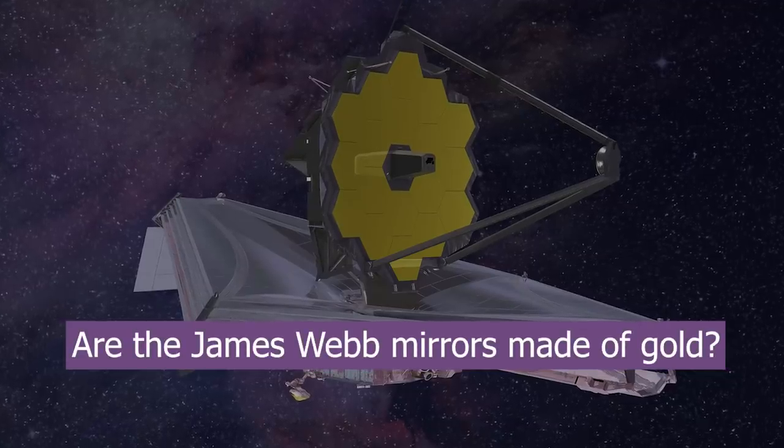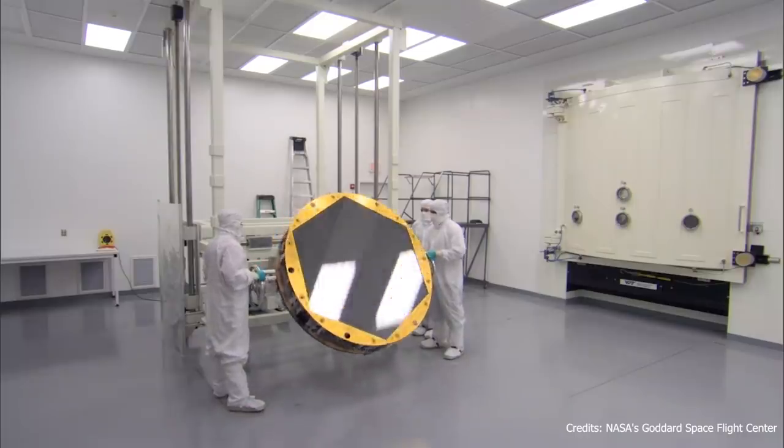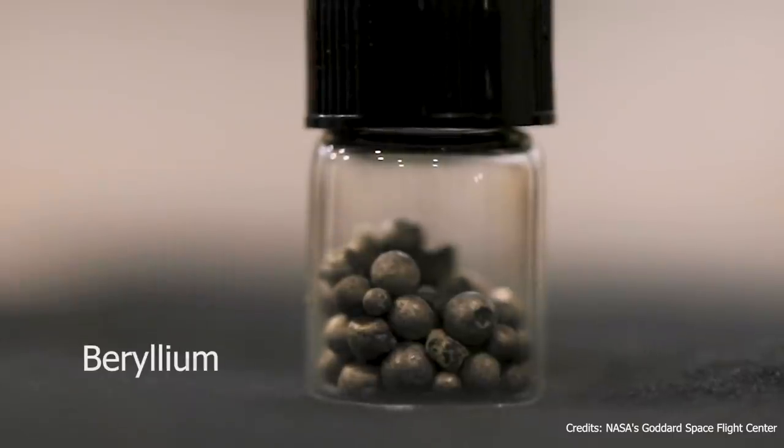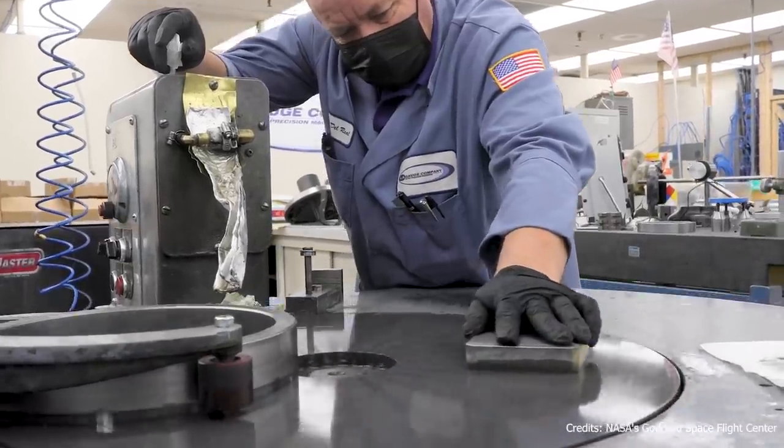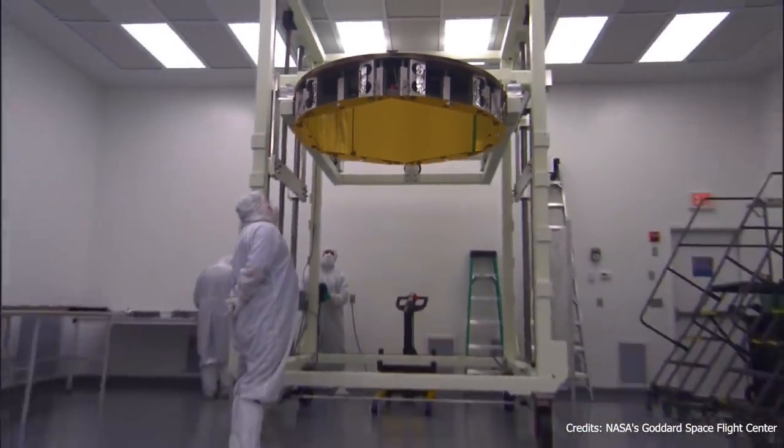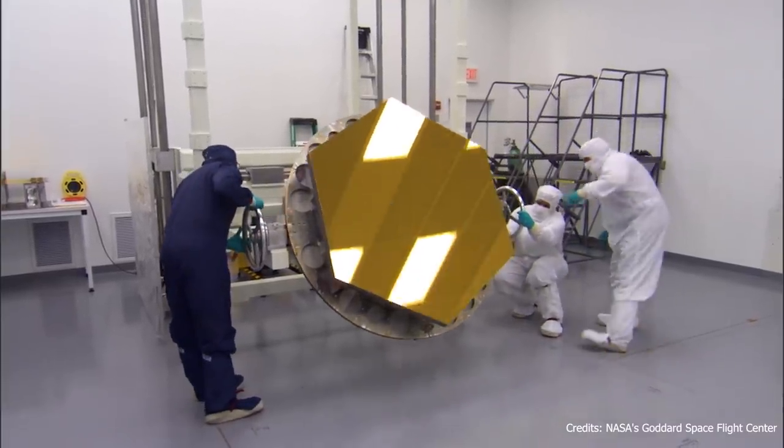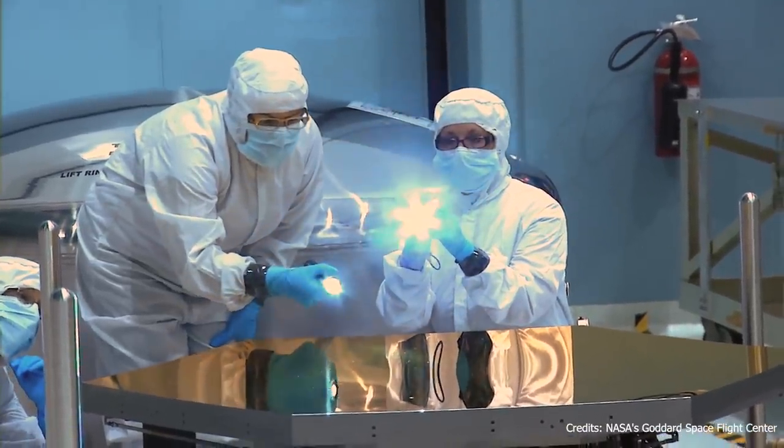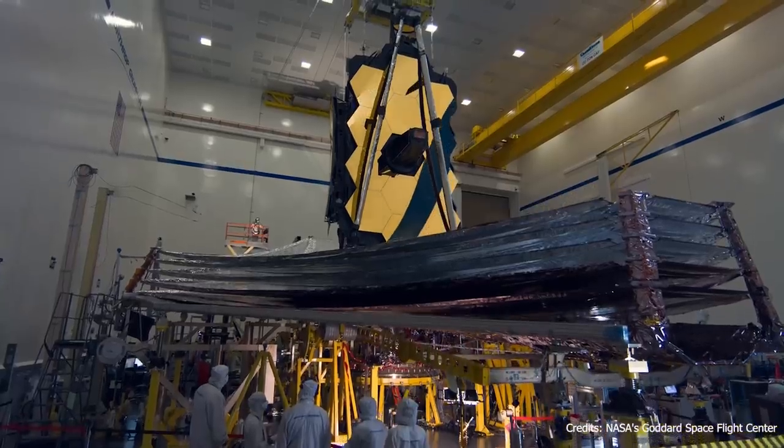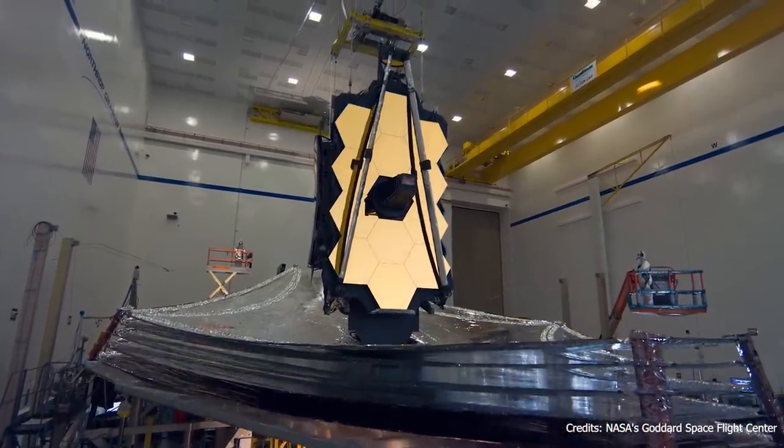Are the James Webb mirrors made of gold? The Webb mirrors are made of beryllium, a light and strong metal capable of holding its shape at very low temperatures. However, the mirrors are indeed covered with a thin layer of gold. Gold is a highly reflective material at infrared wavelengths, which will help to focus light from distant objects onto Webb's instruments. In total, about 48 grams of gold were used in the James Webb mirrors.